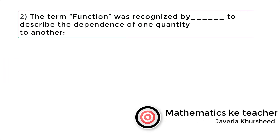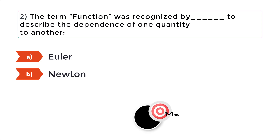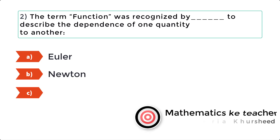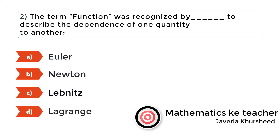Question 2. The term 'function' was recognized by dash to describe the dependence of one quantity to another: a) Euler, b) Newton, c) Leibniz, d) Lagrange.